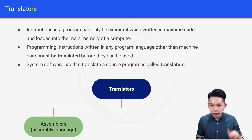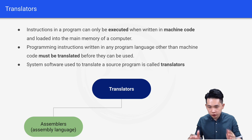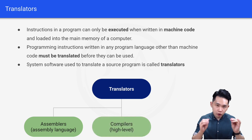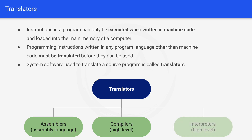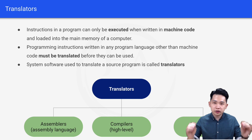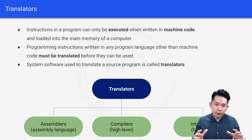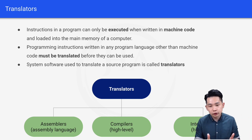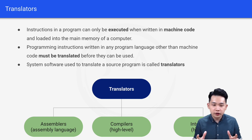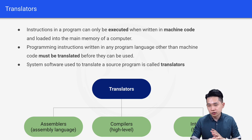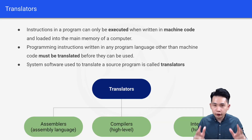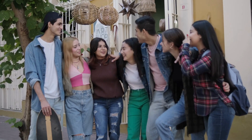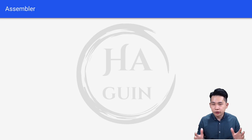There are three types of translators. First, assemblers translate assembly language into machine code. Next, compilers translate high level language into machine code. Lastly, interpreters also translate high level language into machine code. You might be asking what's the difference between assembly language and high level language. Think of it this way: assembly language is closer to what the computer understands, while high level language is a language that you and your friends can understand more easily.